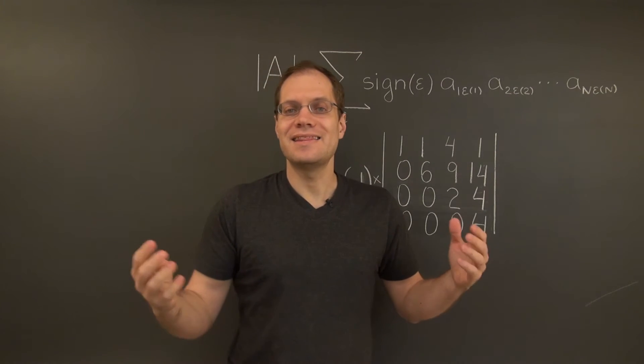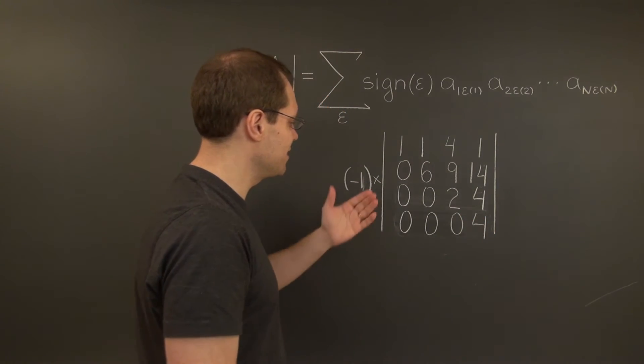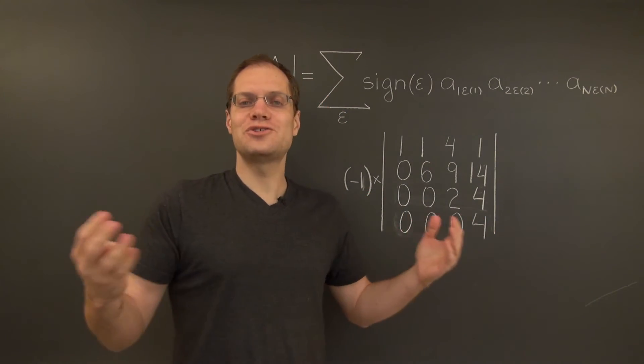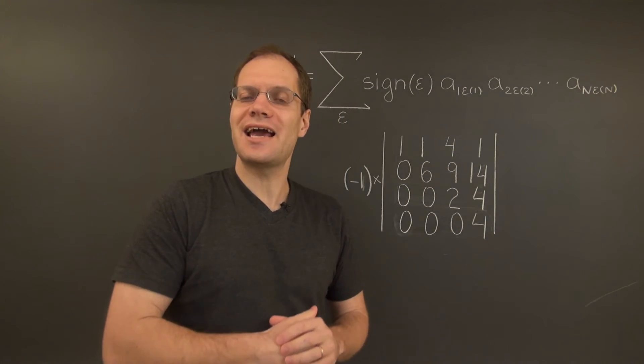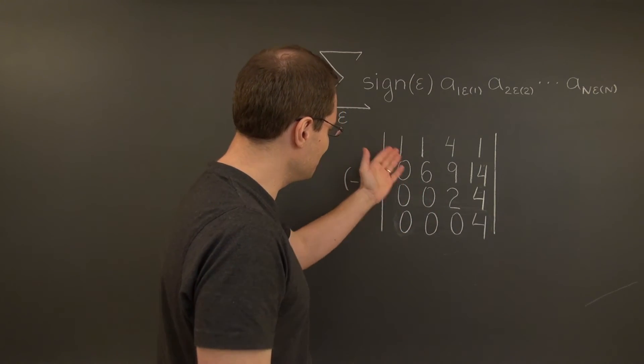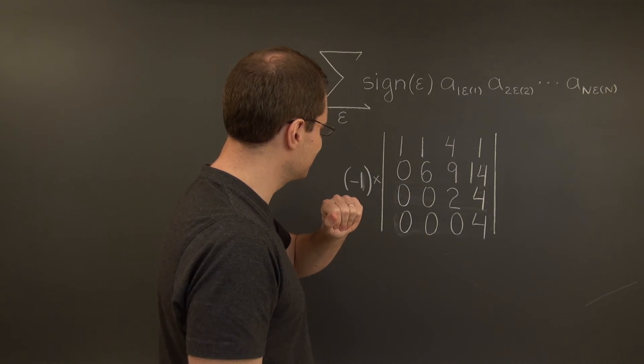Okay, and now we have ended up with an upper triangular matrix, whose determinant is the product of the diagonal entries. And so the determinant of this matrix is 48.